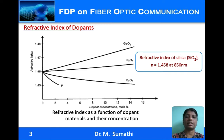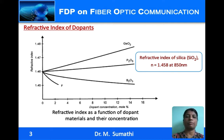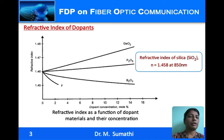The refractive index of silica is 1.458 at 850 nanometers. To vary the refractive indices as required, dopants are added to the silica. When choosing dopants, some properties that should be taken care of are: ease of availability and availability in pure form, properties similar to and matching with silica, and ease of liquefying and vitrifying.